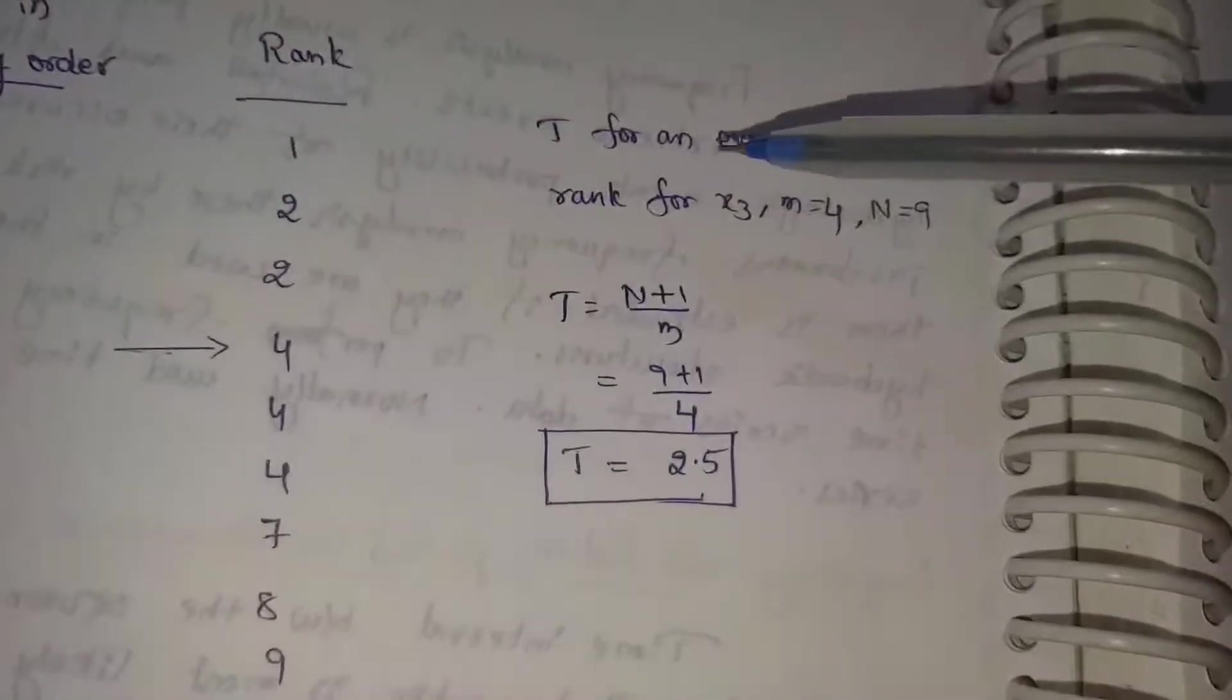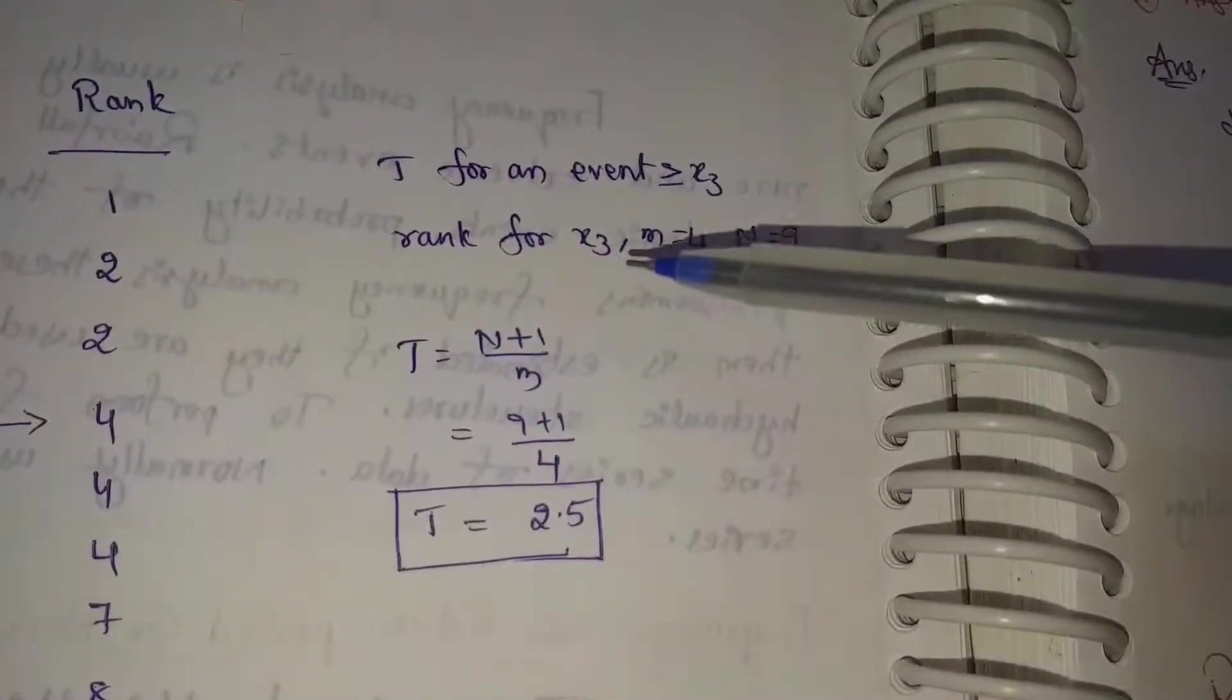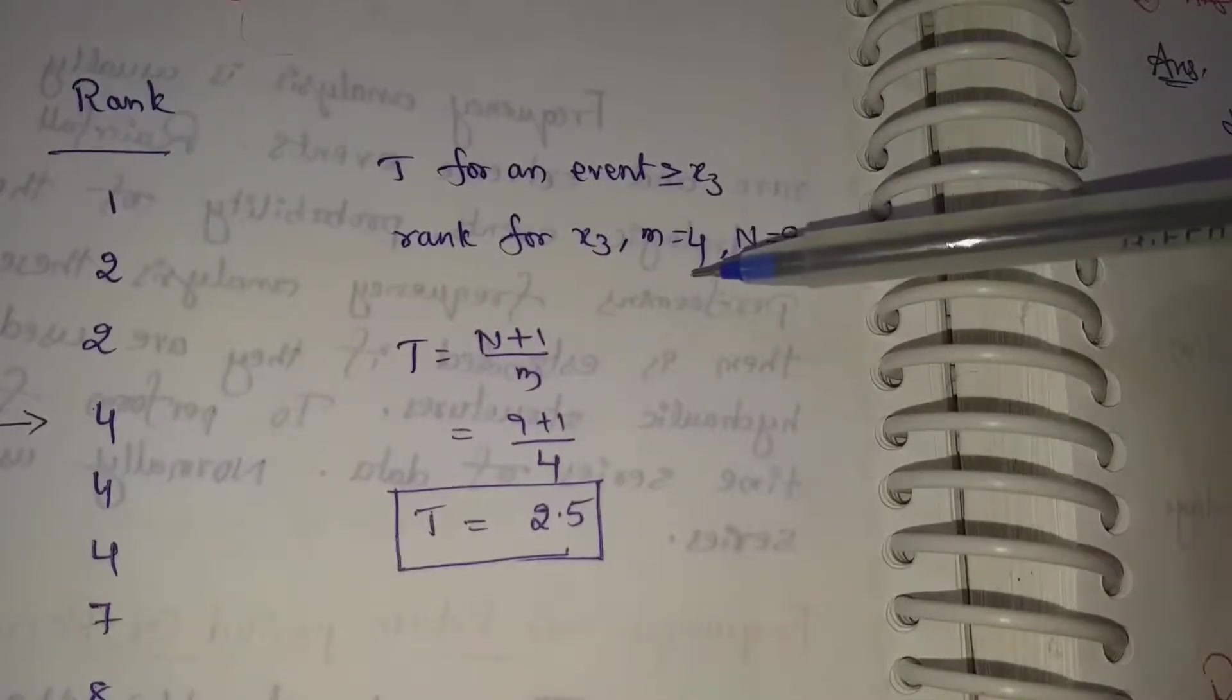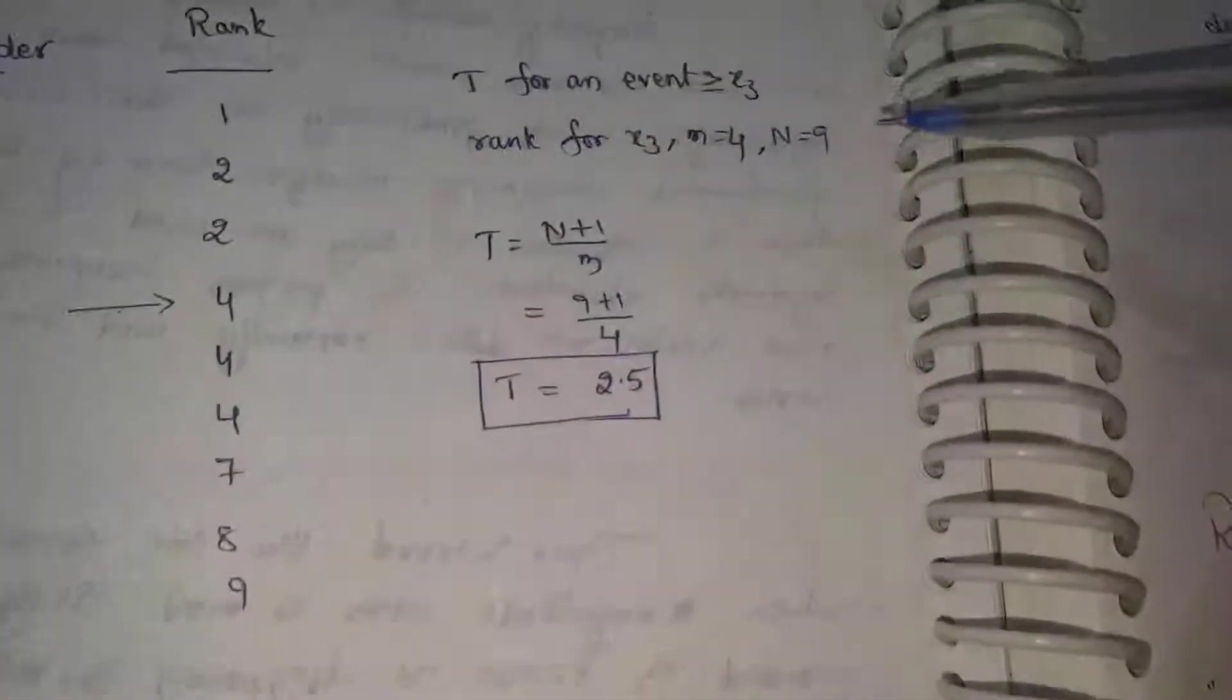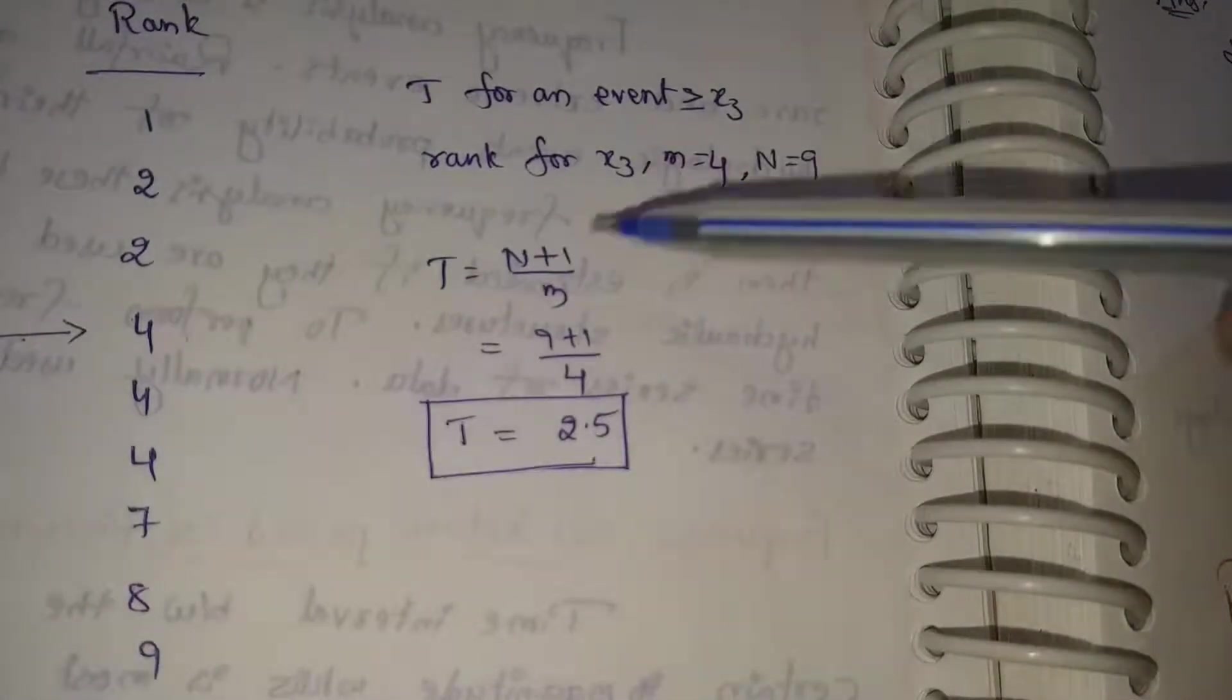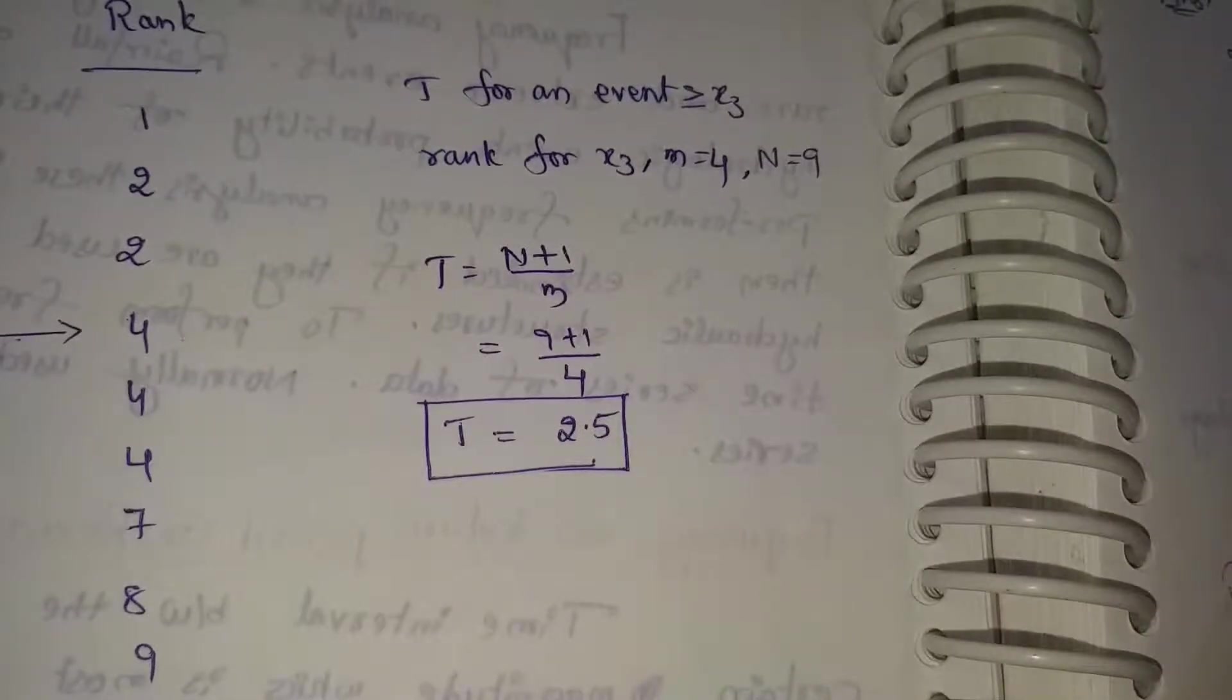We use Weibull's formula to find the frequency. For an event greater than or equal to x3, the rank for x3 is 4, so m equals 4. Sample size N equals 9. Using Weibull's formula: T equals N plus 1 by m equals 9 plus 1 by 4 equals 10 by 4. T equals 2.5.